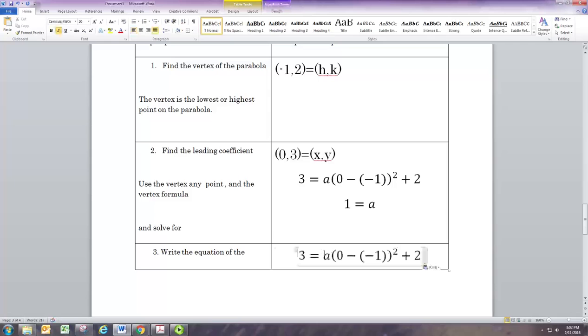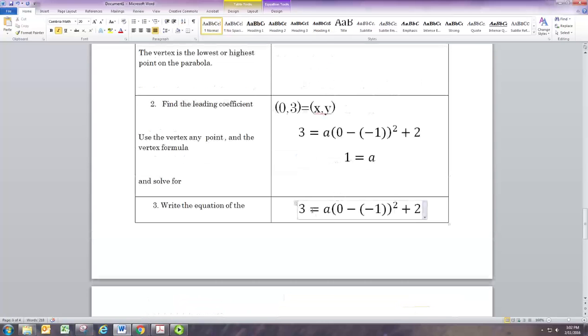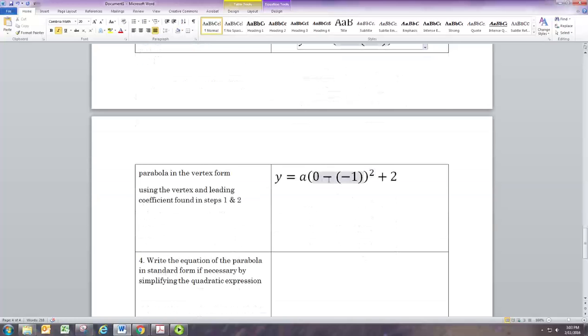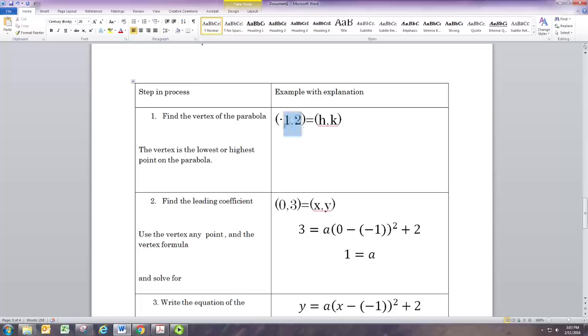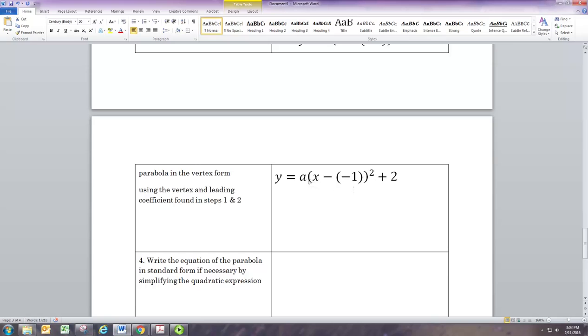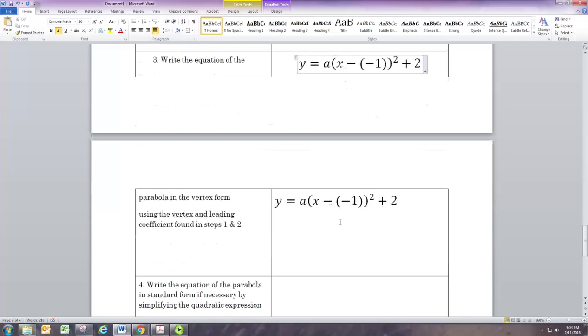And we're now ready to write the equation. We already knew h was negative 1 and k was 2 from looking at the graph. We just needed to know a, and we found out a was 1. Since a is just multiplied there with the quadratic term, you don't really need to put it if it's 1. Similarly, if it's negative 1, you can just put a negative sign. It's also nice to simplify this, subtracting a negative 1, and just write plus 1 on the inside. So this is our simplified vertex form.